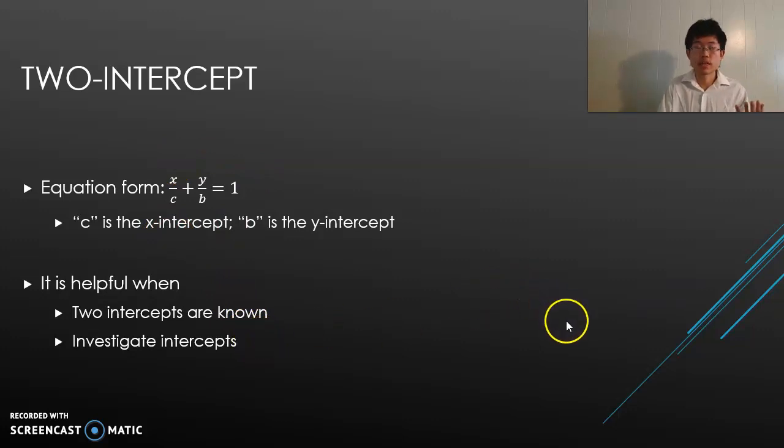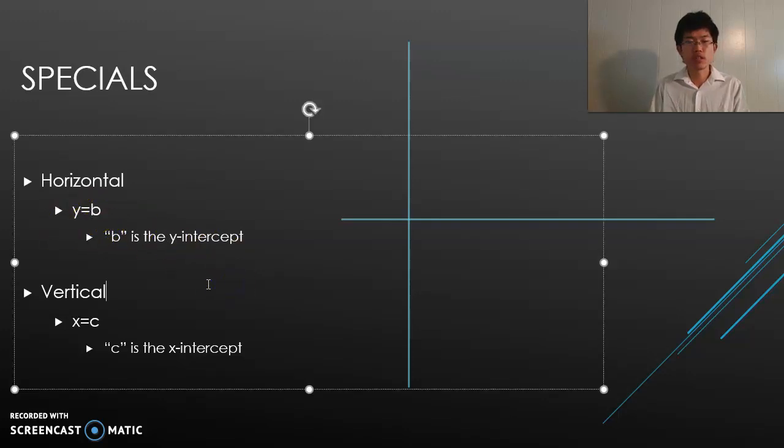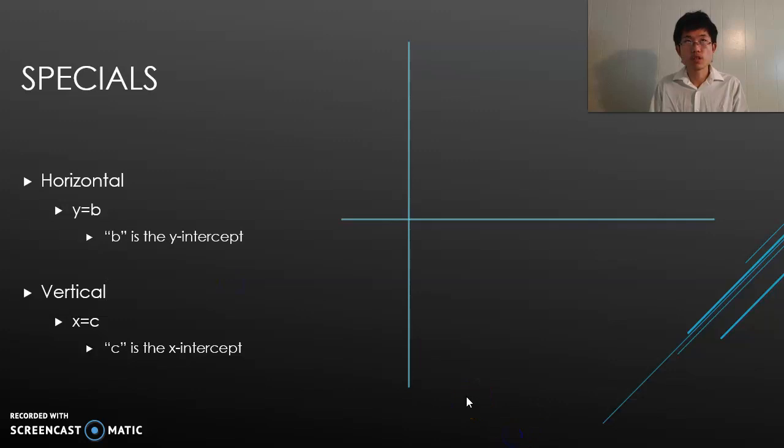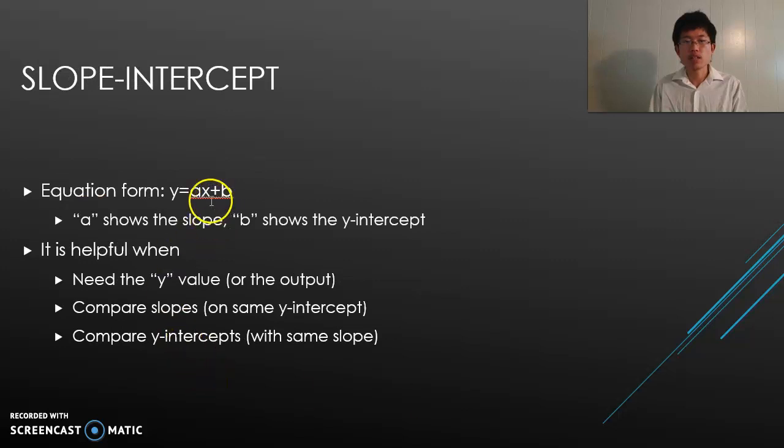Then there are two special types of equations: horizontal lines and vertical lines. Horizontal is this way: y = b. b is the y-intercept. When you go back to the slope-intercept form, y = ax + b, but in this case it's y = b. Notice that ax does not exist. This is because the slope is zero—it's not slanted, it's horizontal.